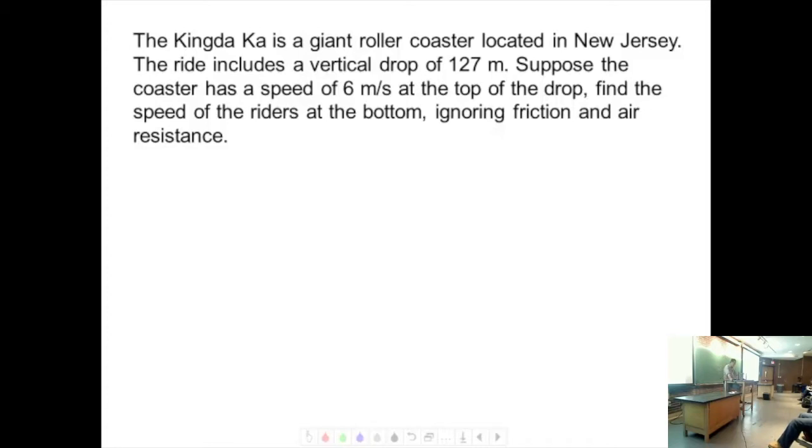So this roller coaster has a vertical drop of 127 meters. So there's my roller coaster, comes down, 127 meters. Suppose the coaster has a speed of 6 meters per second at the top, so I've got a V initial equals 6 meters per second. Find the speed of the coaster at the bottom, ignoring friction and air resistance.